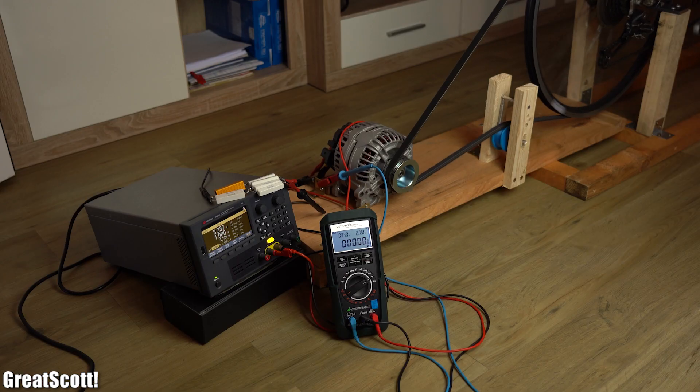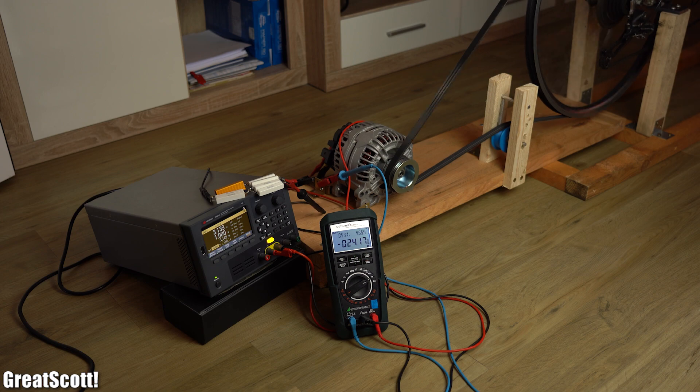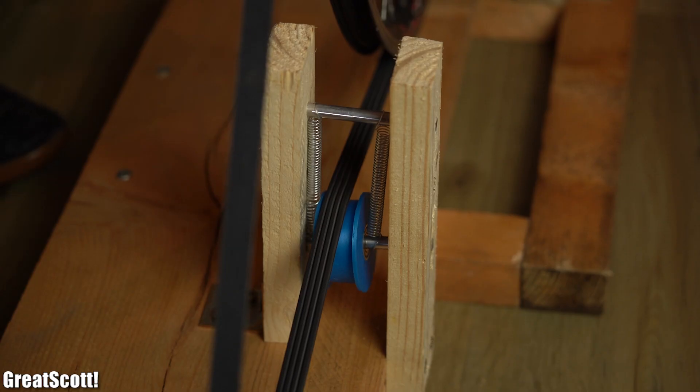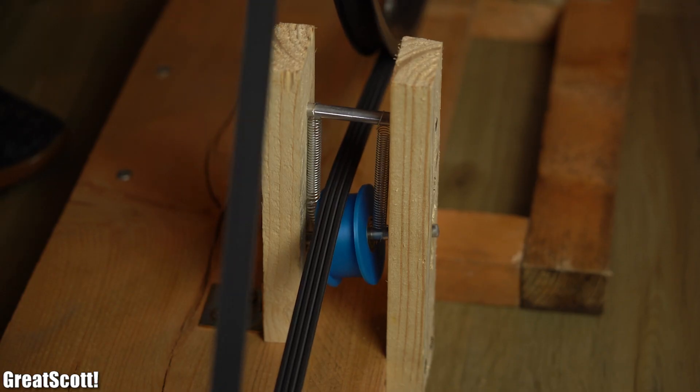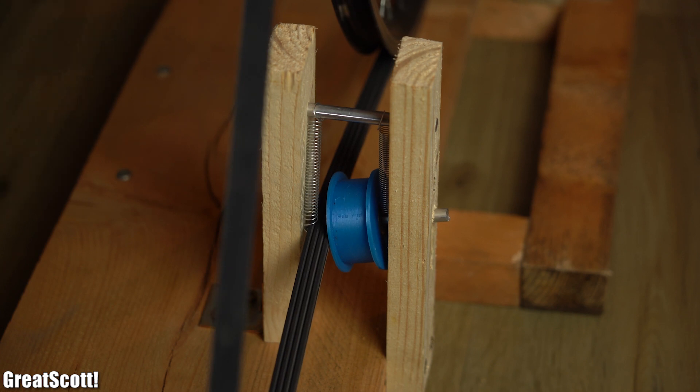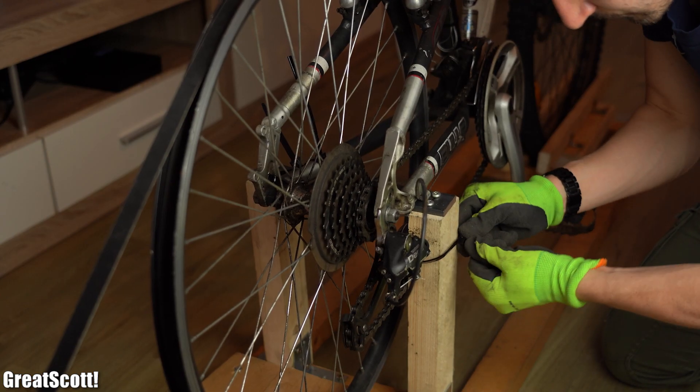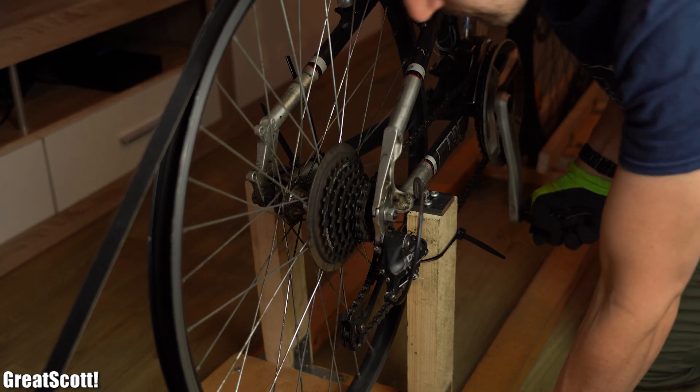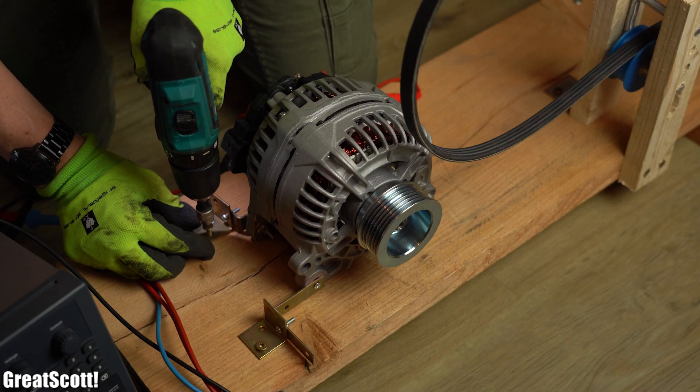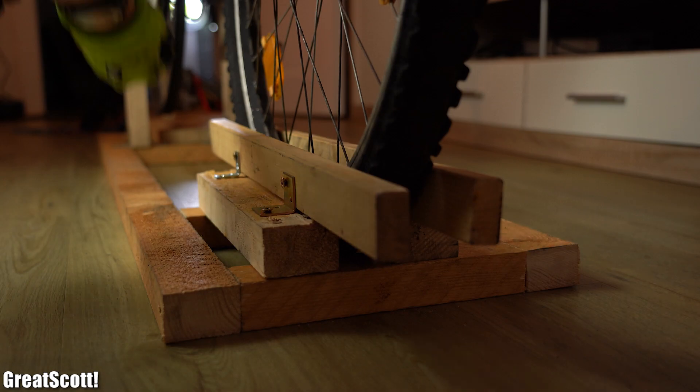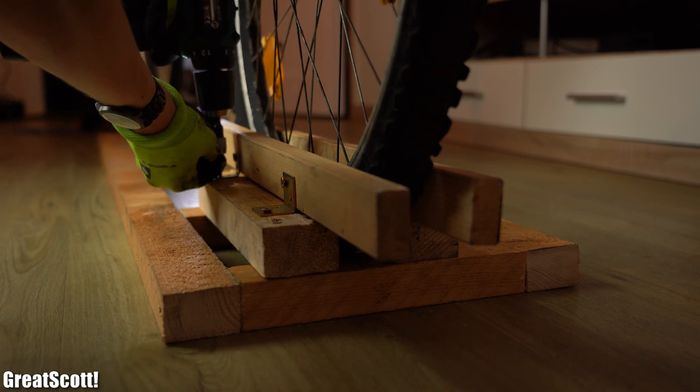And as you can see the belt tensioner does kind of work, but while doing a few tests the belt kept slipping off of it. The solution for this problem was to secure the zip ties in another way and repositioning the alternator as well as moving the front wheel holding construction.